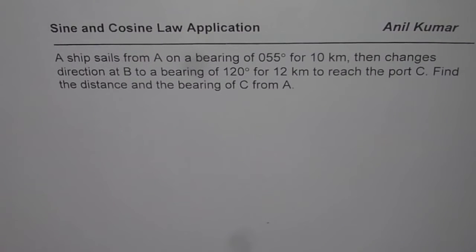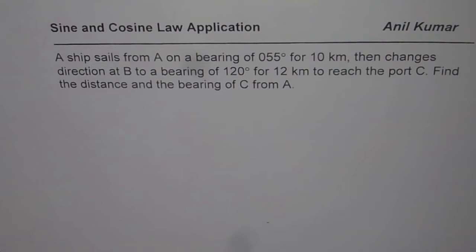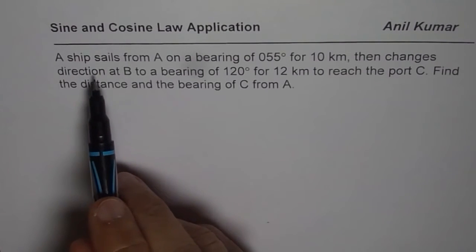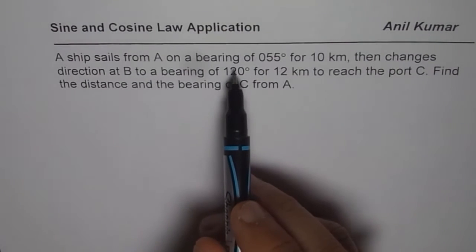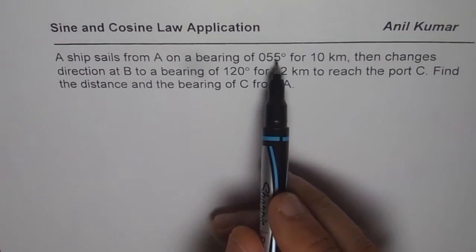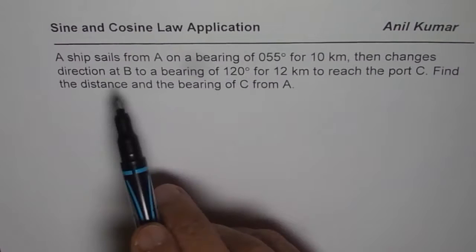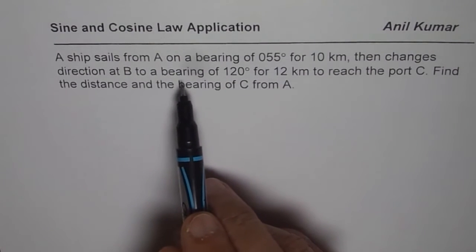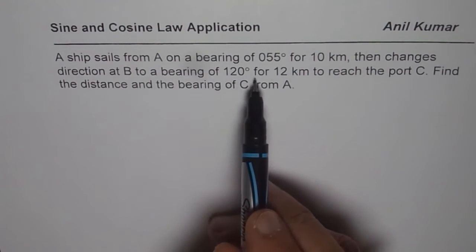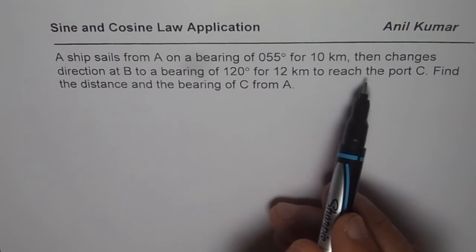I am Anil Kumar and here is a very interesting question on sine and cosine law application. A ship sails from A on a bearing of 055 degrees for 10 kilometers, then changes direction at B to a bearing of 120 degrees for 12 kilometers to reach the port C.